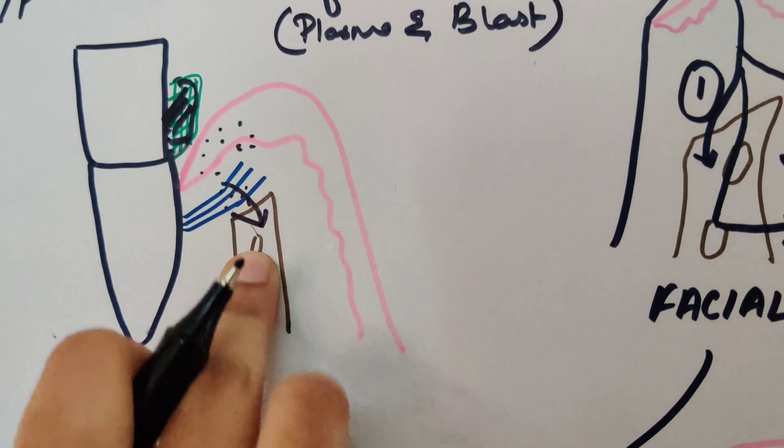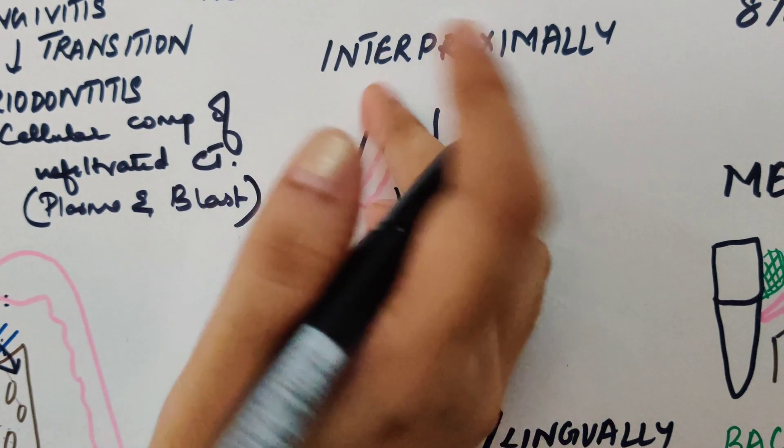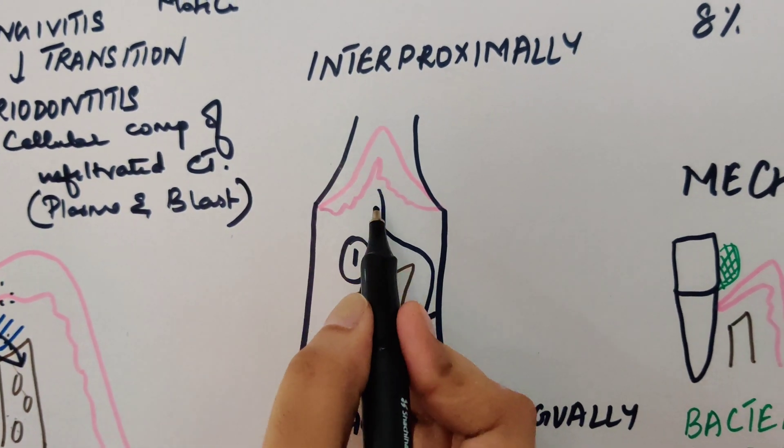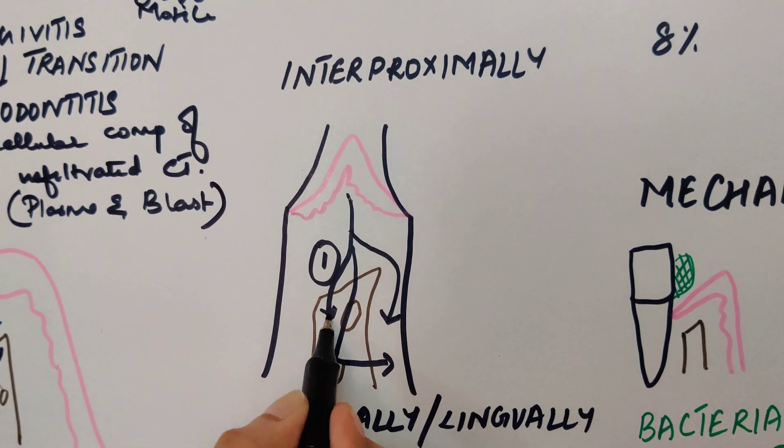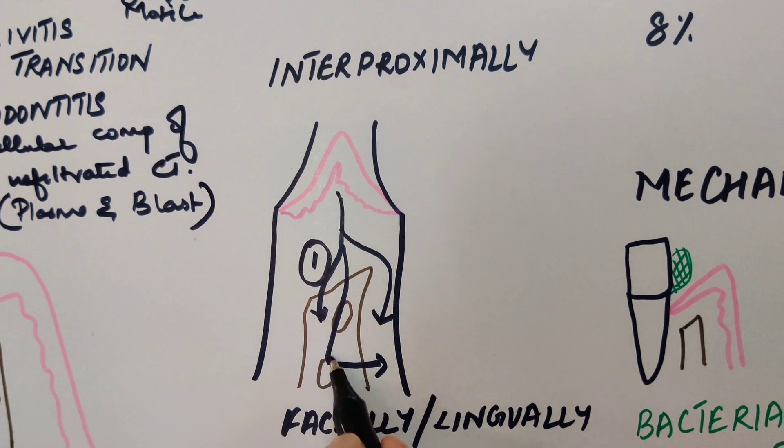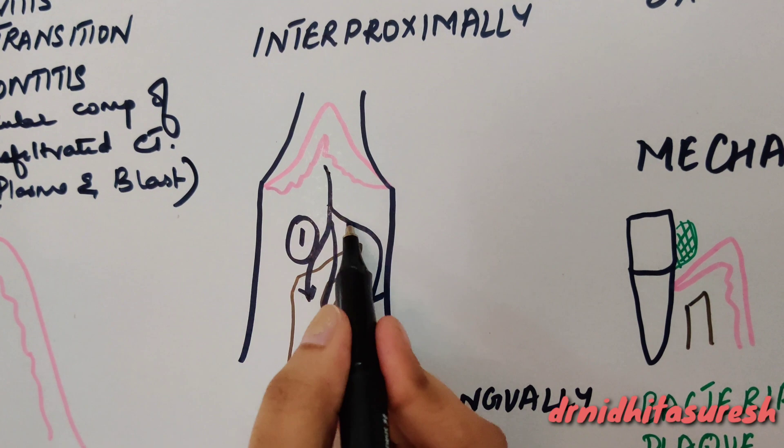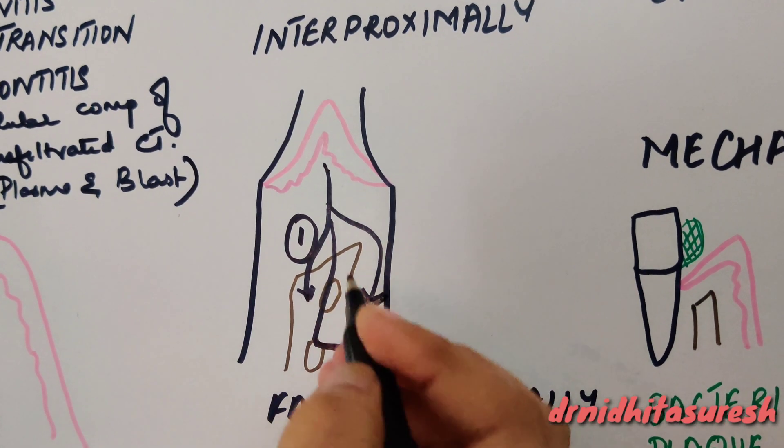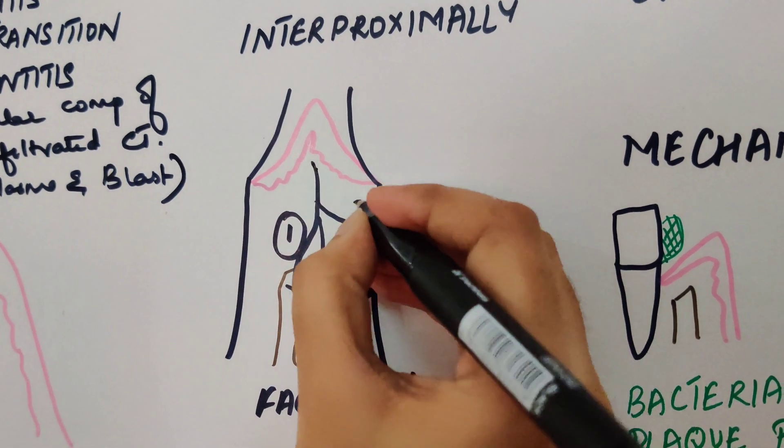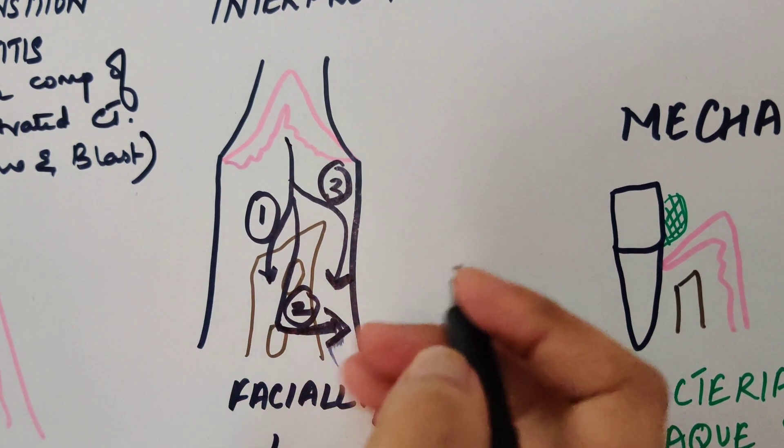Now the inflammatory pathways by which this extends from gingiva to the bone, first let's see interproximally. What happens is that it extends from gingiva into the bone, or from the bone into the periodontal ligament, or from the gingiva into the periodontal ligament. So these are the three ways by which interproximally it is going to spread.